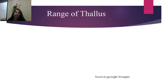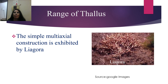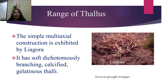Still continuing with the range of thallus — the simple multiaxial construction is exhibited by Liagora. You can see here how Liagora looks. There are many axes. It has soft dichotomous leaf branching and calcified gelatinous thallus. These are growing attached to the substratum in the littoral region. They are calcified because they secrete calcium carbonate, and their thalli are gelatinous.